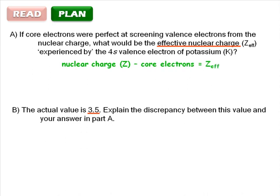The number of core electrons will be the number of electrons that are not in the valence or outermost shell of the atom. And the nuclear charge is always the same as the element's atomic number. Remember, atomic number tells you how many protons are in the nucleus.